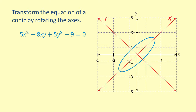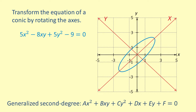We can now develop the rotation of axes formulas, which allow us to transform a second-degree equation in xy into an equation in the new capital XY system of a conic that is familiar to us. We will use the generalized equation ax squared plus bxy plus cy squared plus dx plus ey plus f equals 0.